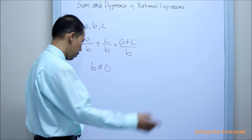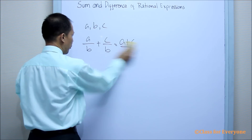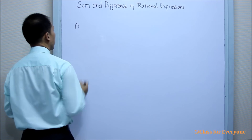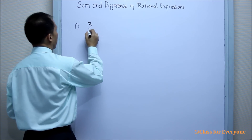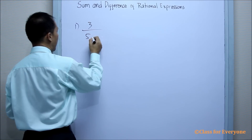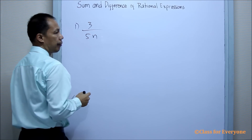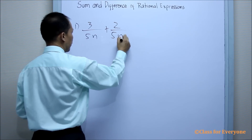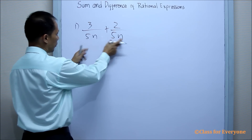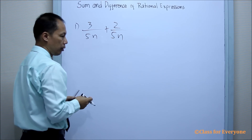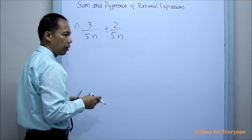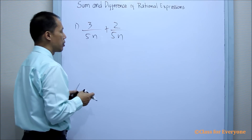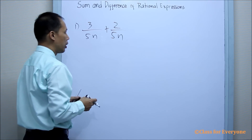Now, we now have an example. Example number one: suppose we have three over five N plus two over five N. So, we have the same denominator. And in adding a fraction, if it has the same denominator, it is like our similar fractions. So, this is now a similar rational expression.